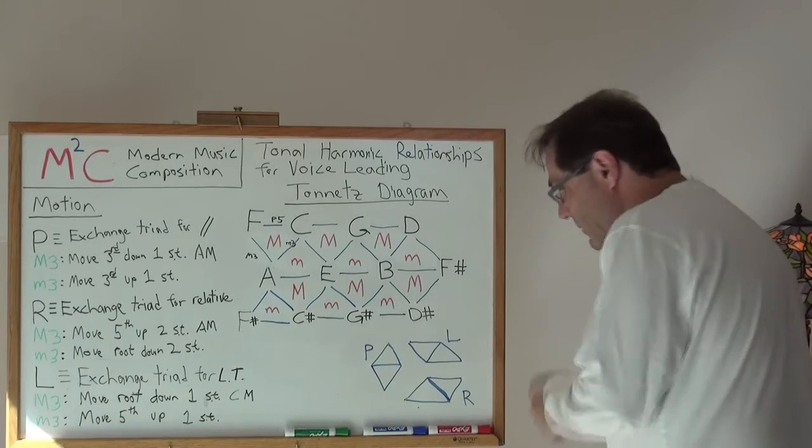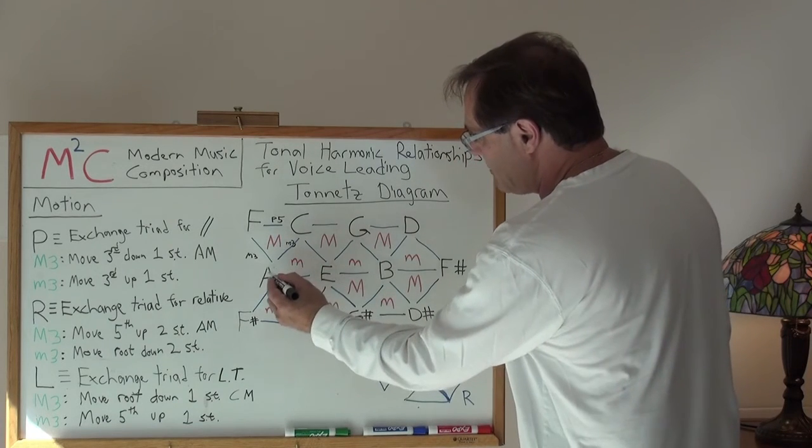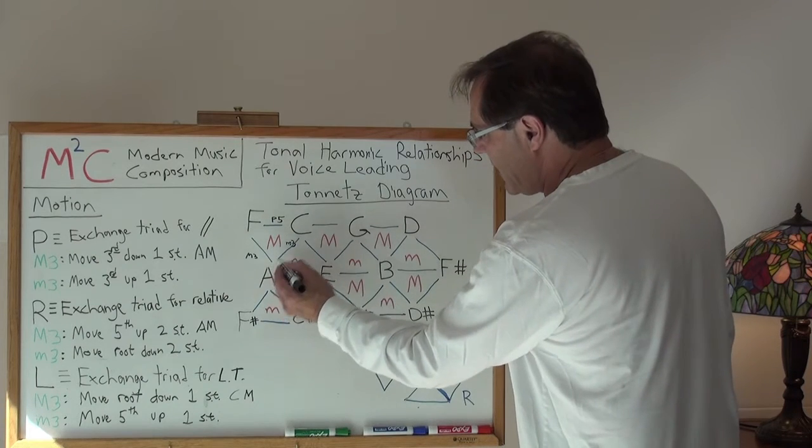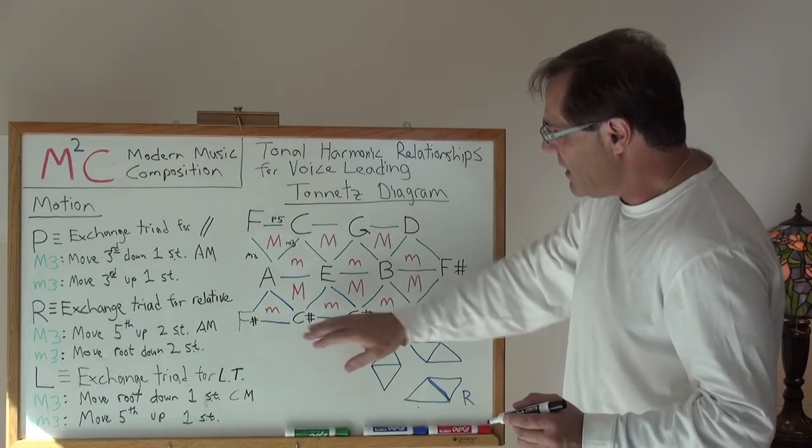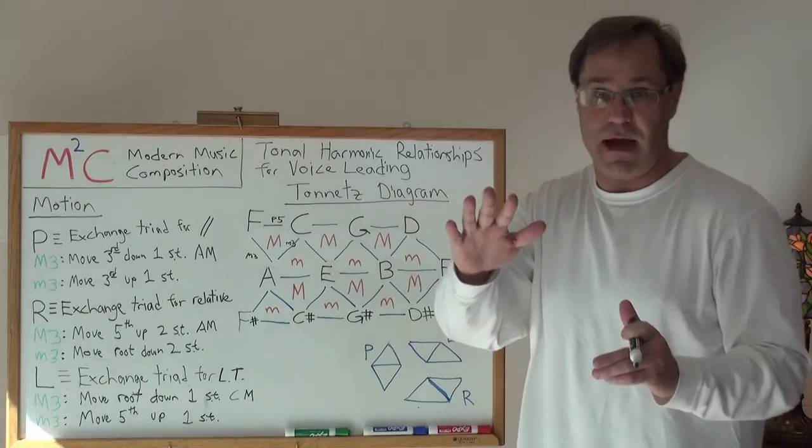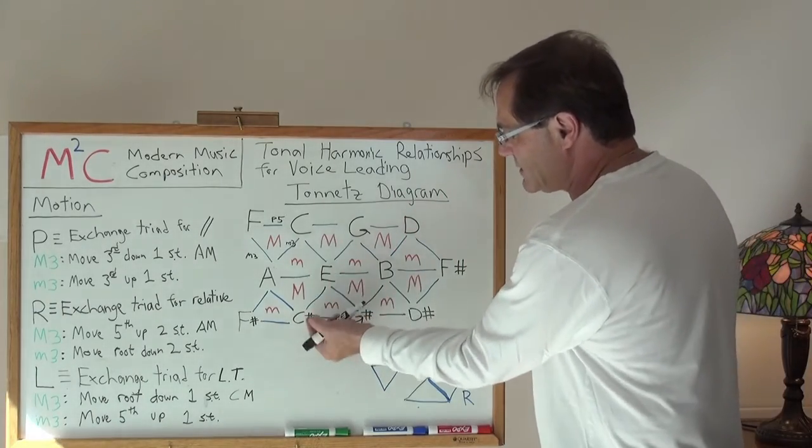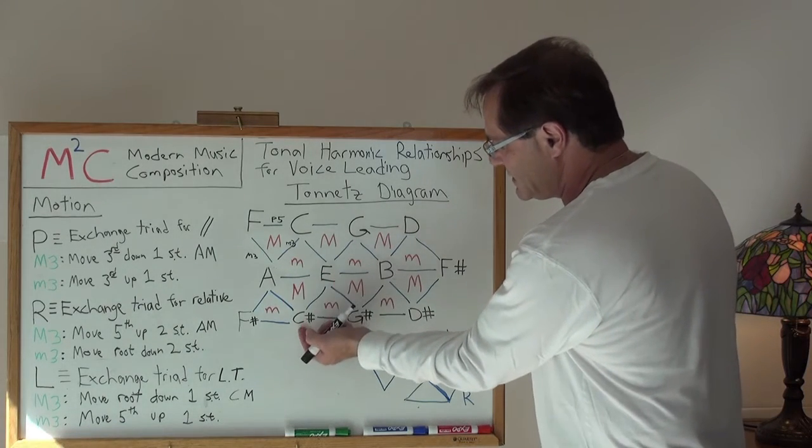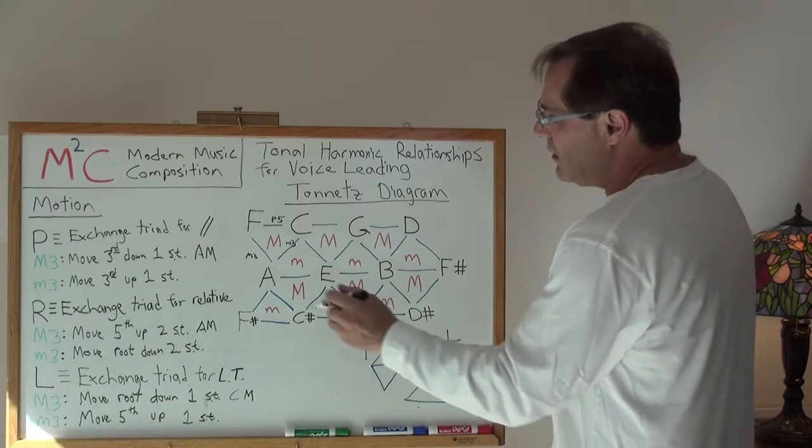What does that look like? Well, here's A major: A, C sharp, E. Here's A major, A, C sharp, E. A minor: A, C, E. I take and I fold this up, and I've now, and this is what makes this diagram interesting, you can see that A and E are held constant, and C sharp just folds around to C.